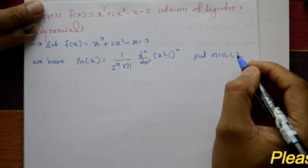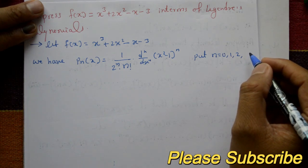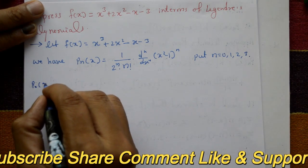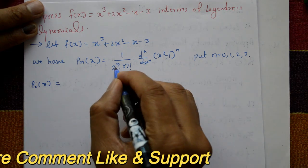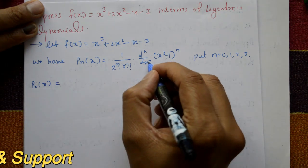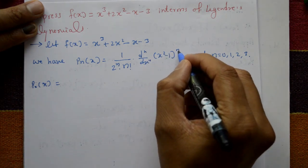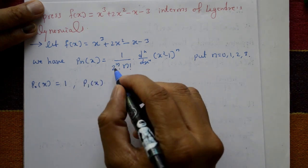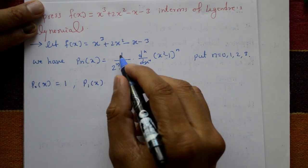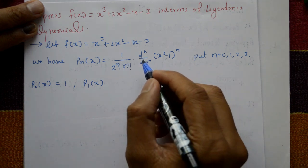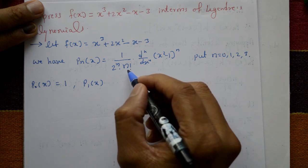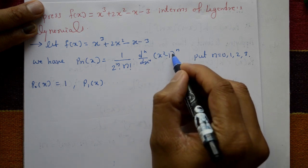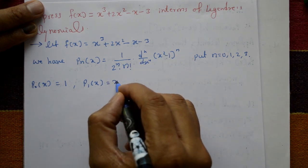For n = 0: P₀(x) = 1, since 2⁰ = 1, 0! = 1, and (x² - 1)⁰ = 1. For n = 1: P₁(x) = 1/(2·1!) · d/dx of (x² - 1), which gives P₁(x) = x.